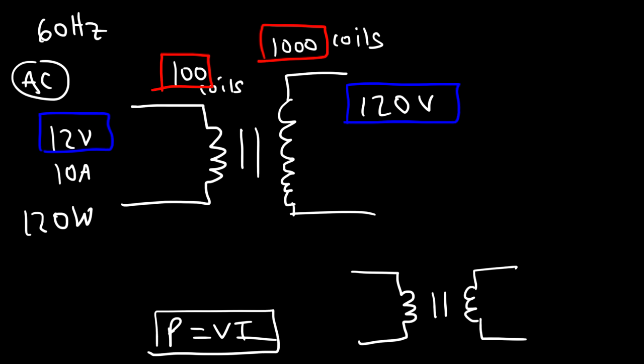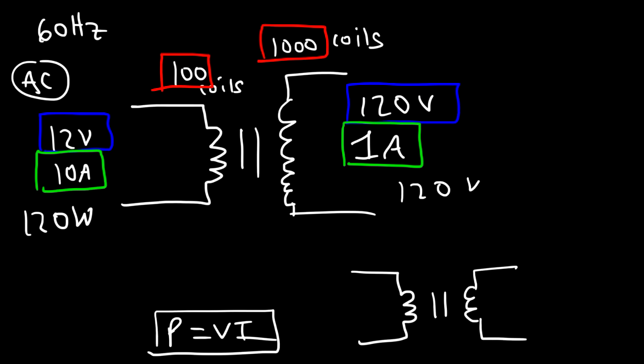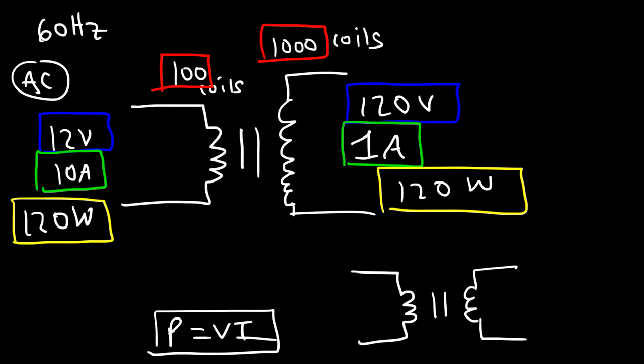The current decreases by a factor of 10 — from 10 amps down to 1 amp on the right side. The power on the right side is 120 times 1, still 120 watts. This is in harmony with the law of conservation of energy, which states that energy cannot be created or destroyed. The power absorbed by the transformer on one side must equal the power delivered on the other side.